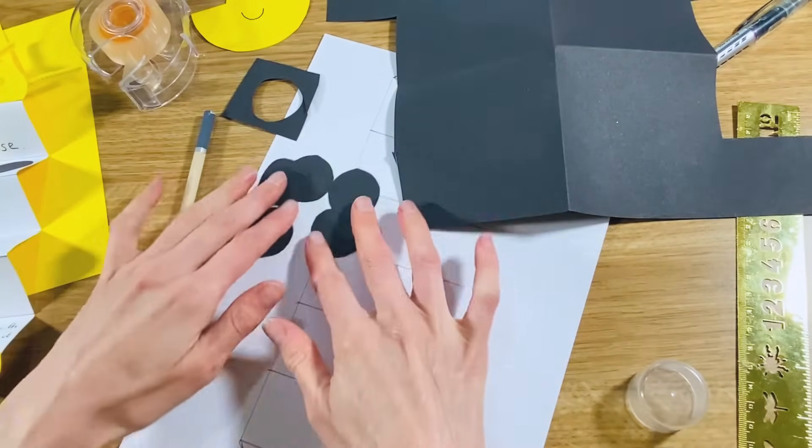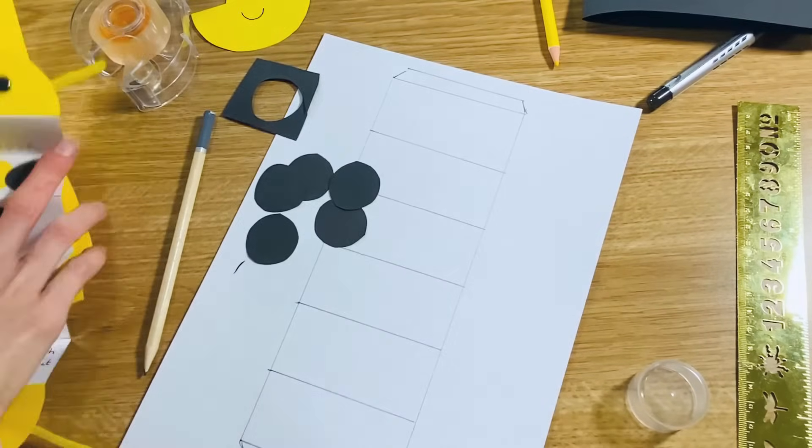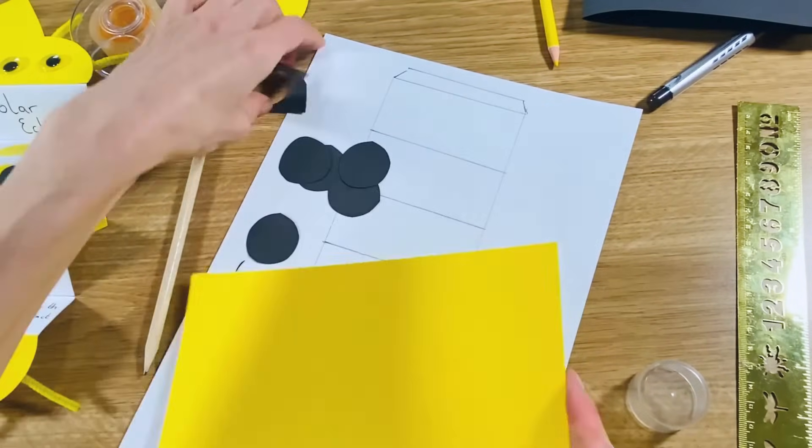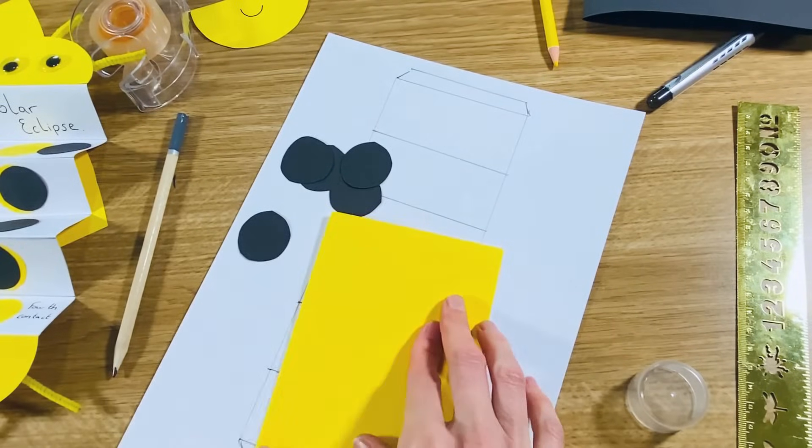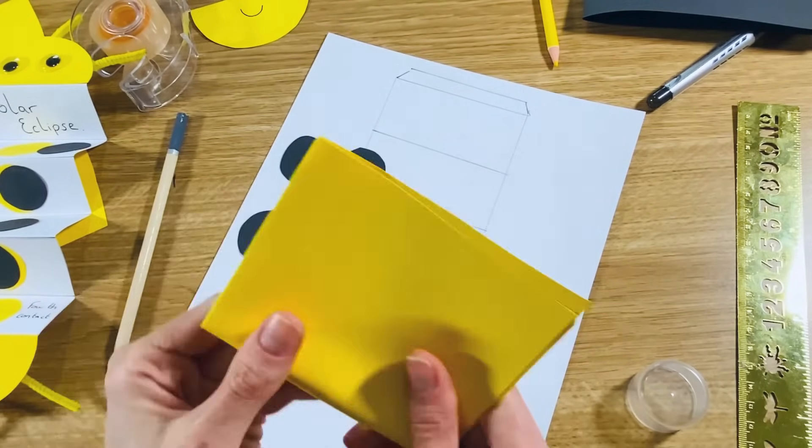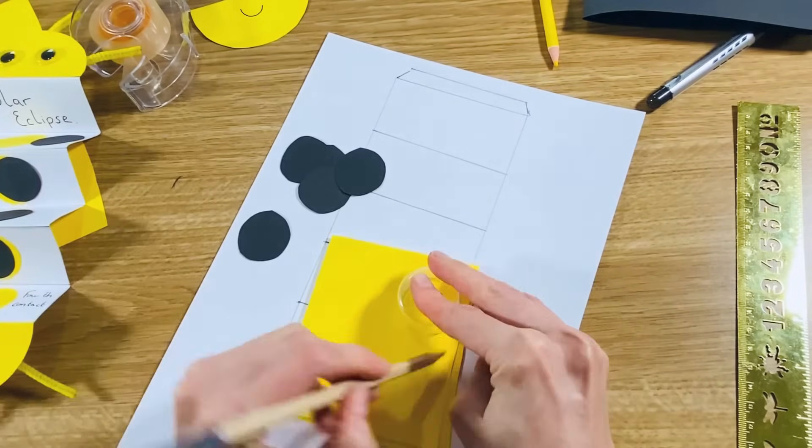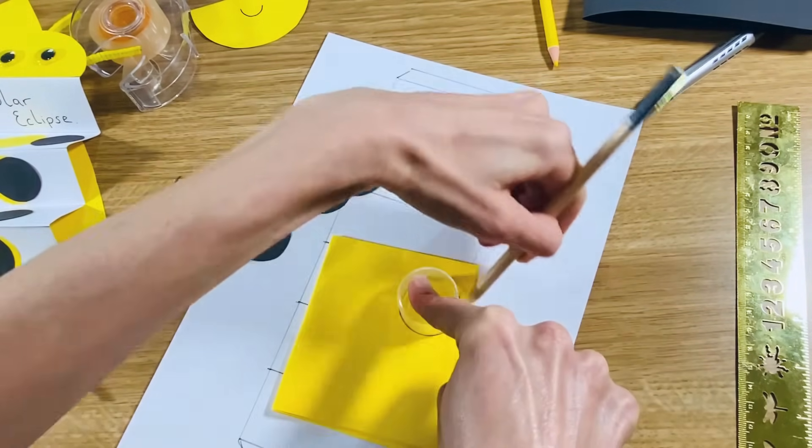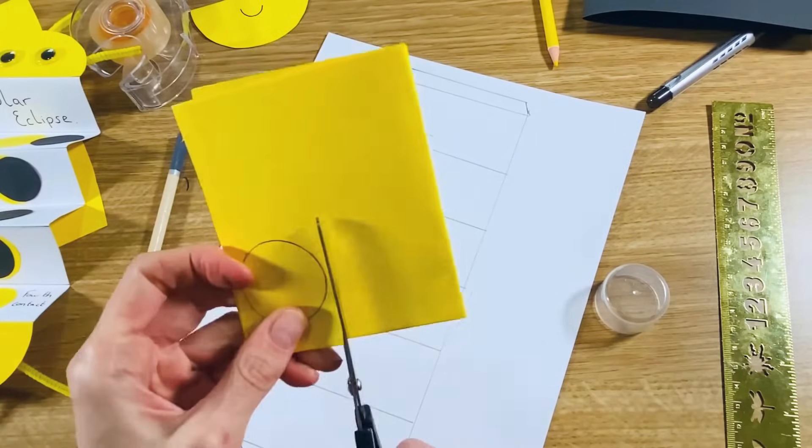Okay, so we've got five moons there. Now we want to make our suns, so I've got my yellow card, and then again I'm going to fold it into four pieces, four parts. Use my lid, draw around the outside, take the scissors, and cut them out.